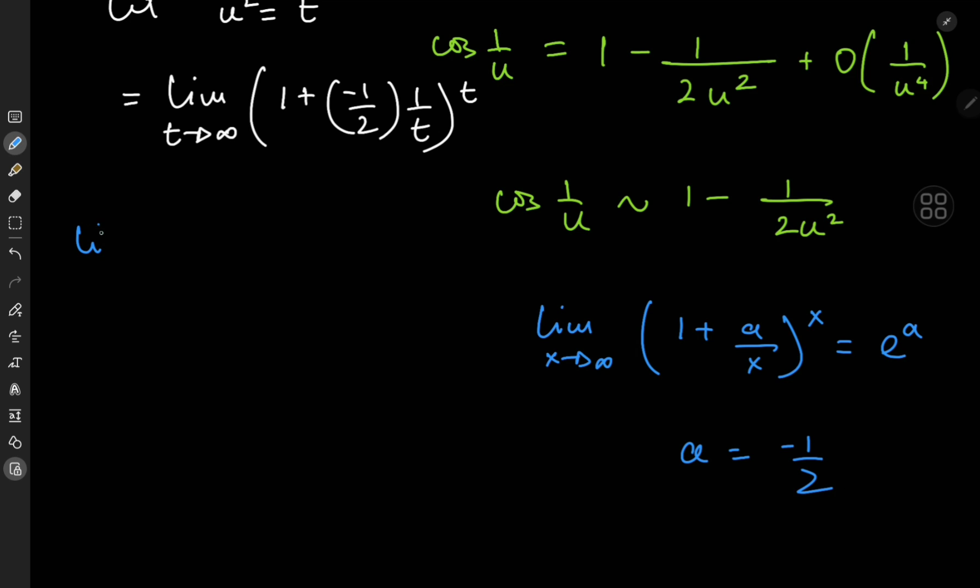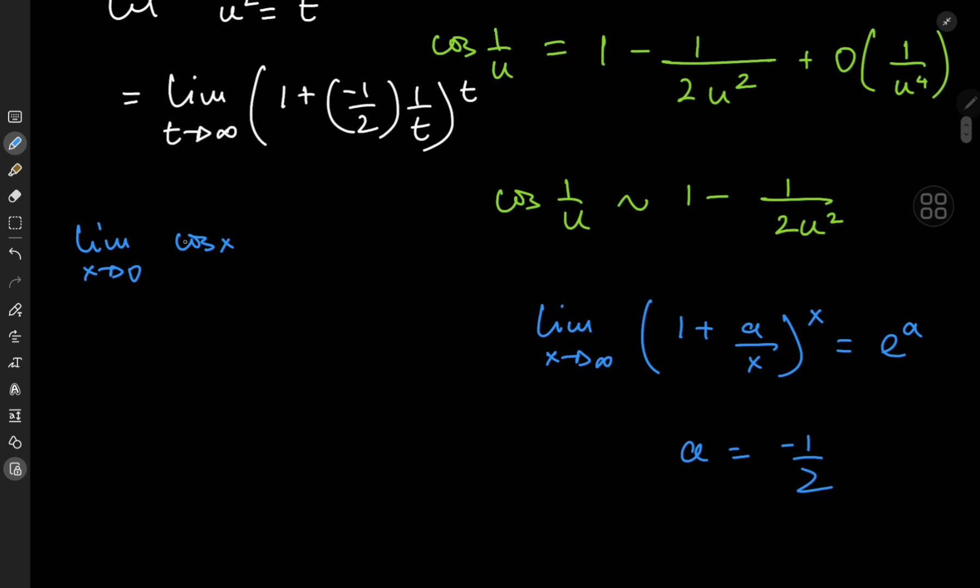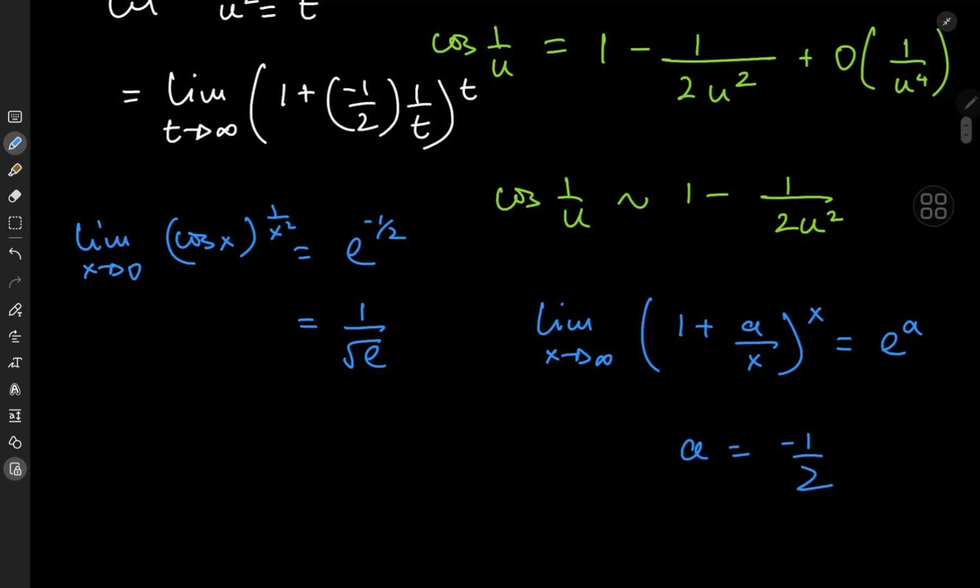And all this means that the limit as x approaches 0 of cosine x to the 1 by x squared equals e to the negative 1 half, or 1 by root e, which is a pretty cool structure for the final result of this limit.